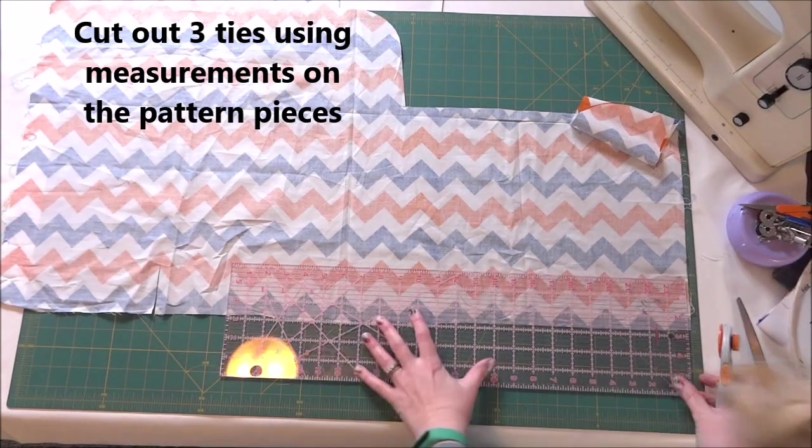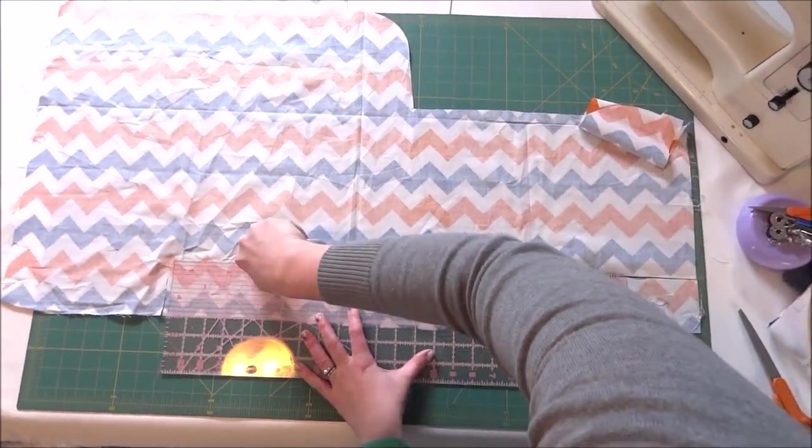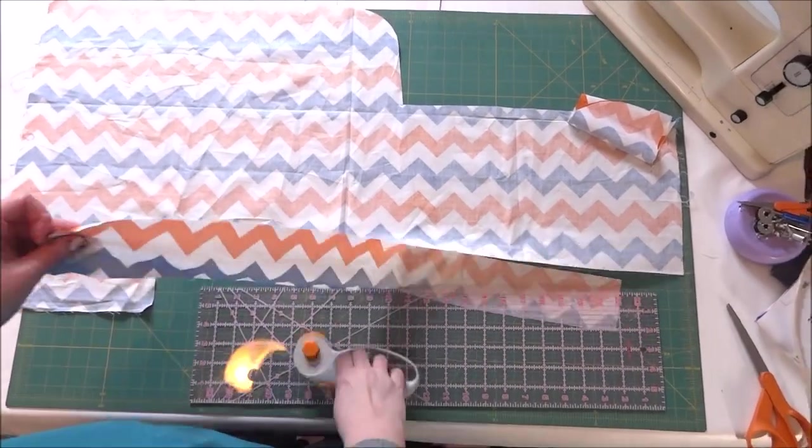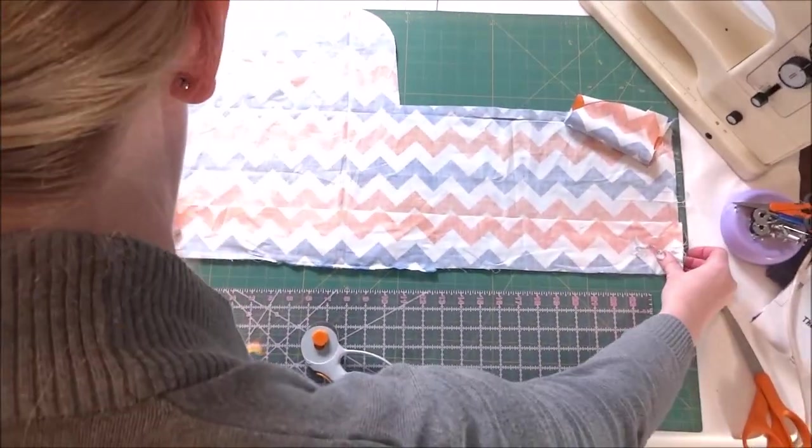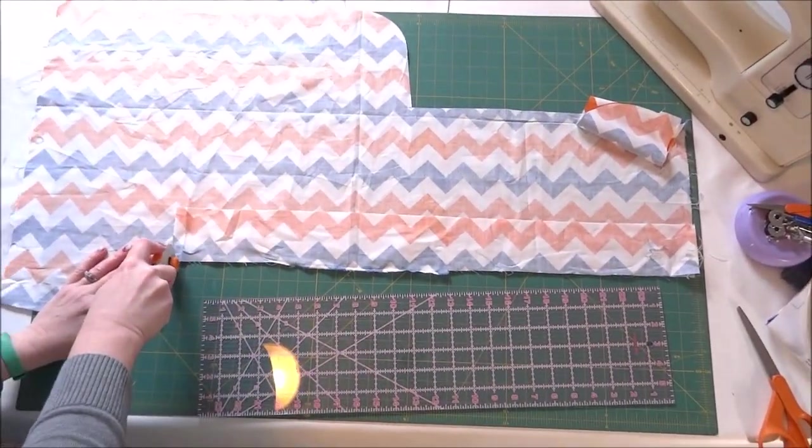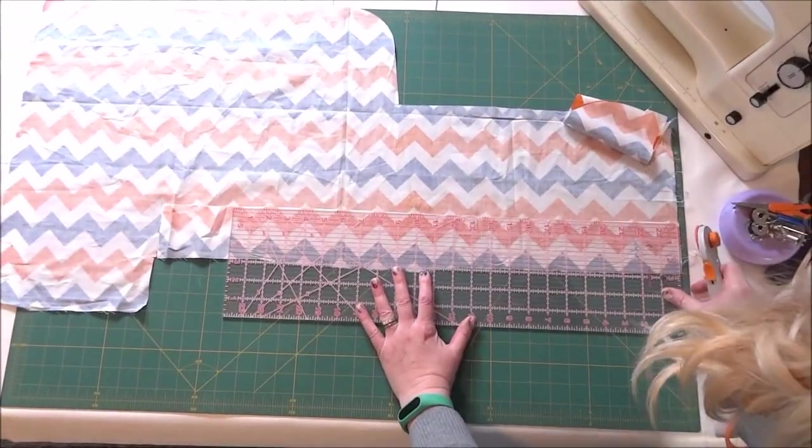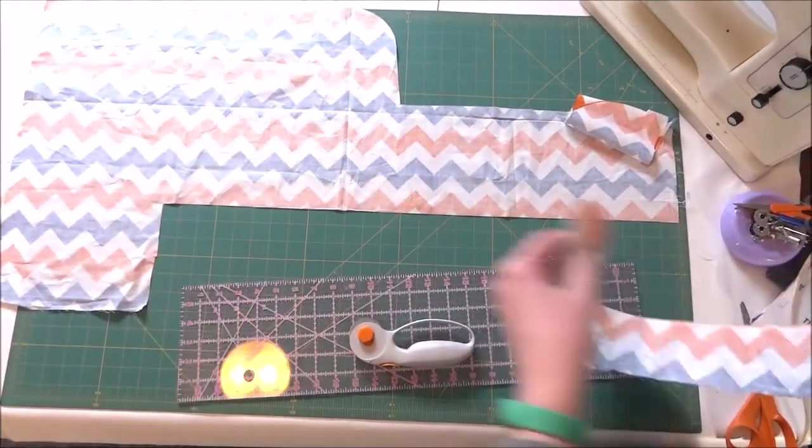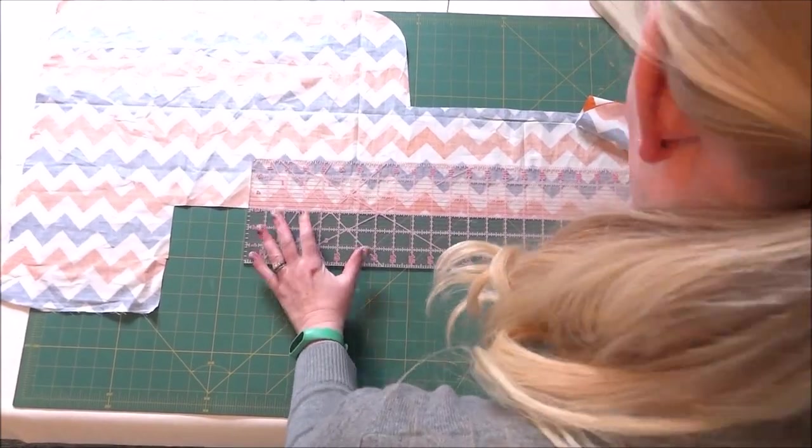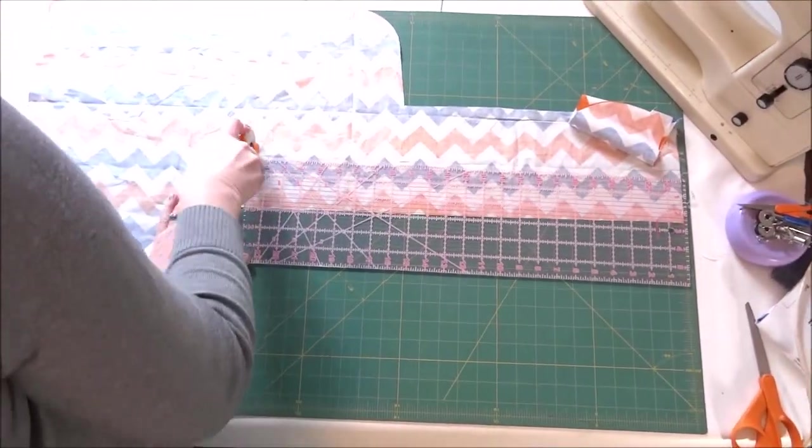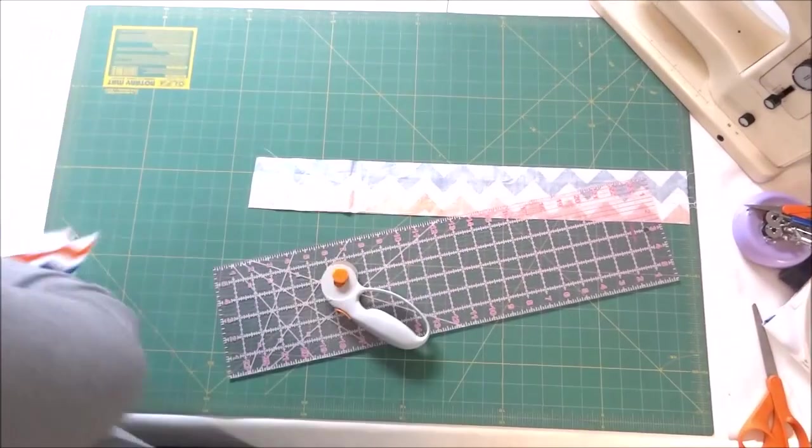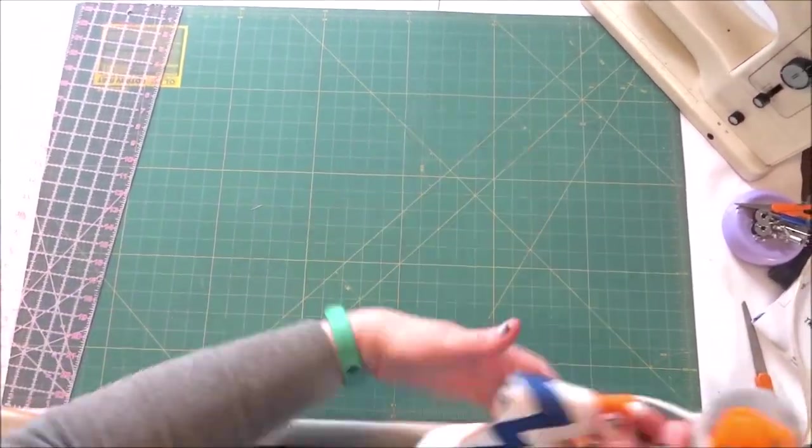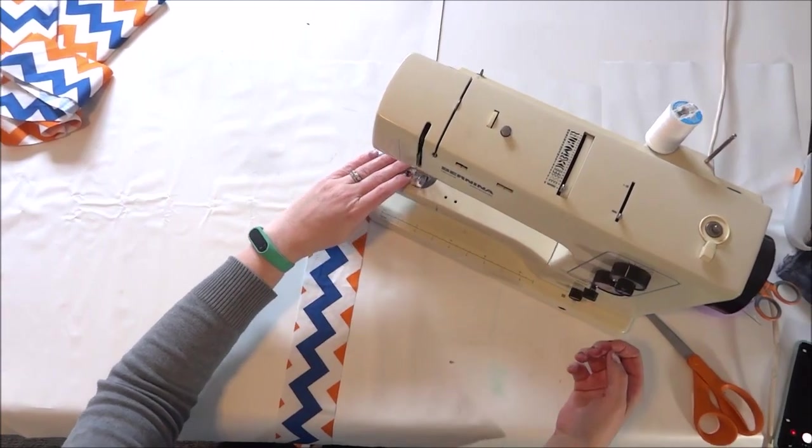Now you're going to cut out the ties. You're going to have three different ties - two of the ties are going to be for the sides and one of the ties is going to be around the neck. These two ties are about 25 to 28 inches long, and this one here looks like it's probably about 23 inches. Again, that's in the pattern.